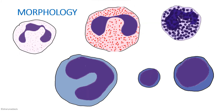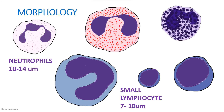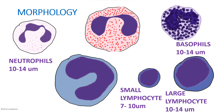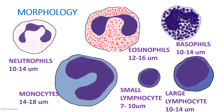Regarding relative size of WBCs: the smallest is the small lymphocyte, comparable in size to an RBC. Slightly bigger are neutrophils, basophils, and large lymphocytes — differentiated by granules: fine pink granules indicate neutrophil, coarse granules indicate basophil, and no granules with an oval nucleus indicate large lymphocyte. Bigger than these are eosinophils with orange-red granules, and the largest WBC is the monocyte.